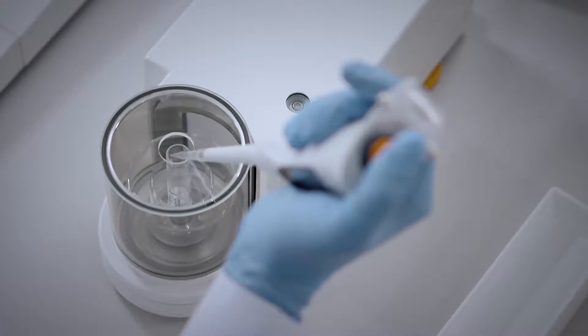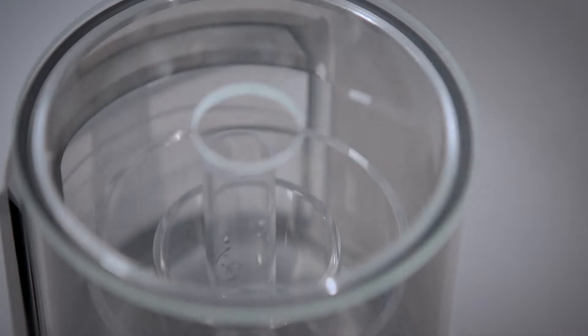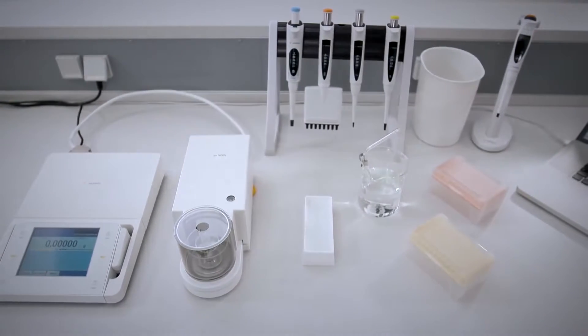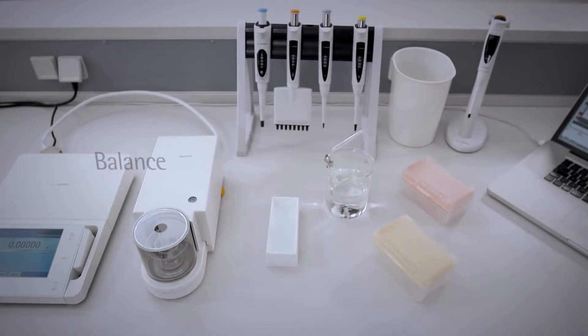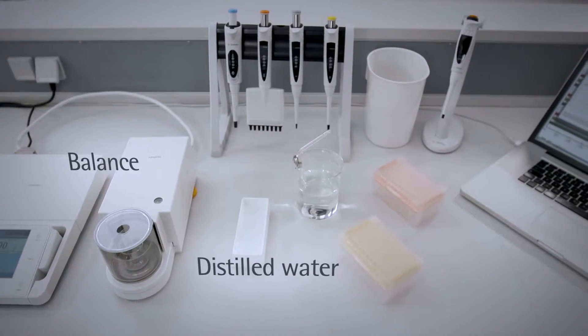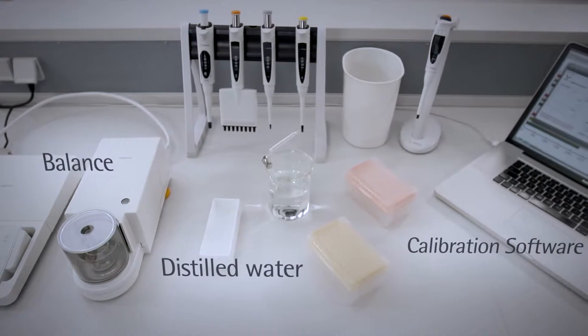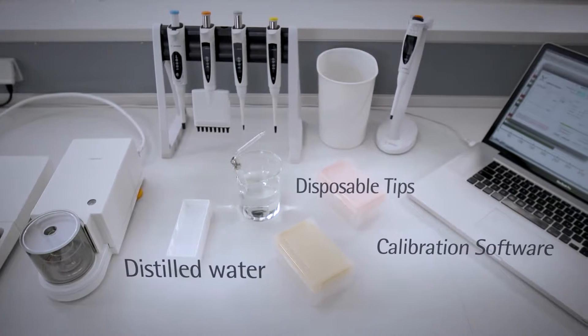One of the key aspects of pipette calibration is equipment. To successfully ensure your pipette's accuracy and precision, you will need a balance, distilled water, calibration software, as well as disposable tips for your pipettes.